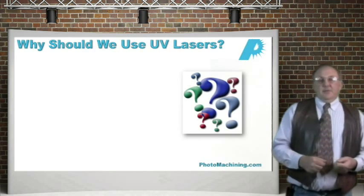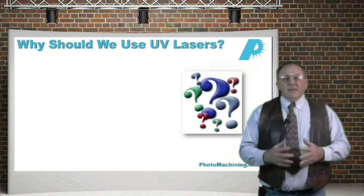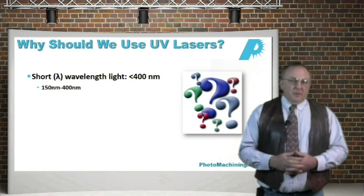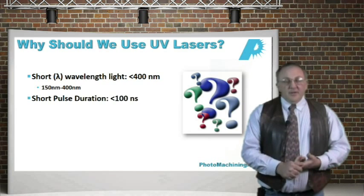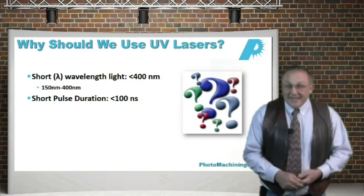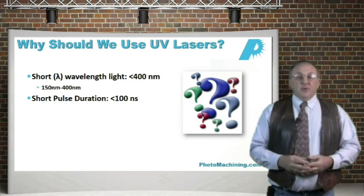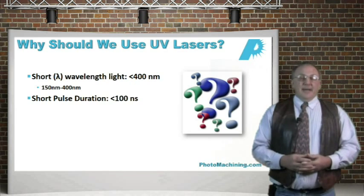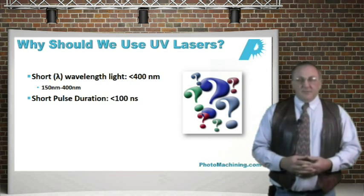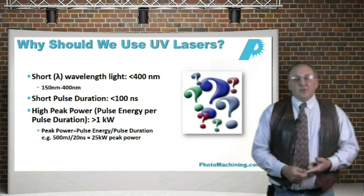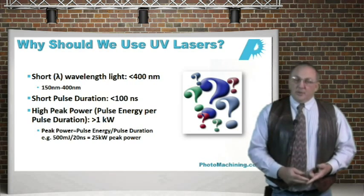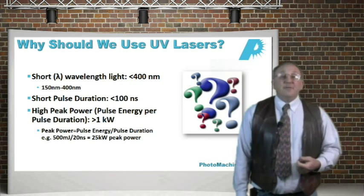Why should we use UV lasers? The wavelength of a UV laser is very short, below 400 nanometers, typically between about 150 nanometers to 400 nanometers. The pulse duration is also short because of the way these lasers are made — generally less than 100 nanoseconds, and a lot less for some lasers. Because we have high energy per pulse and short pulse duration, the peak power in UV lasers is very high, usually more than a kilowatt and sometimes up to several megawatts.